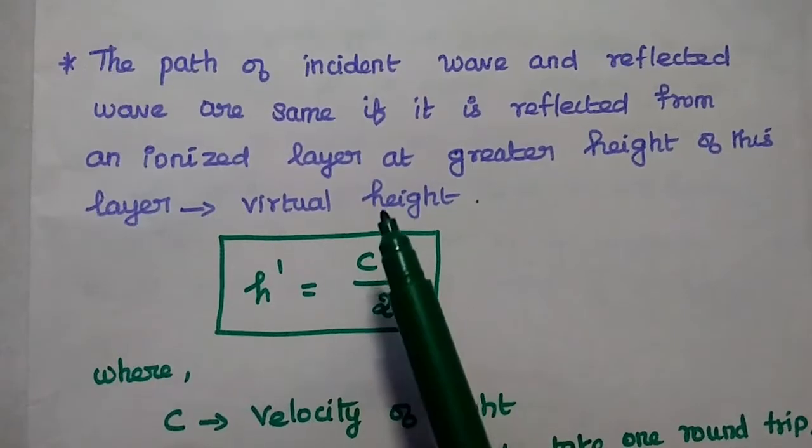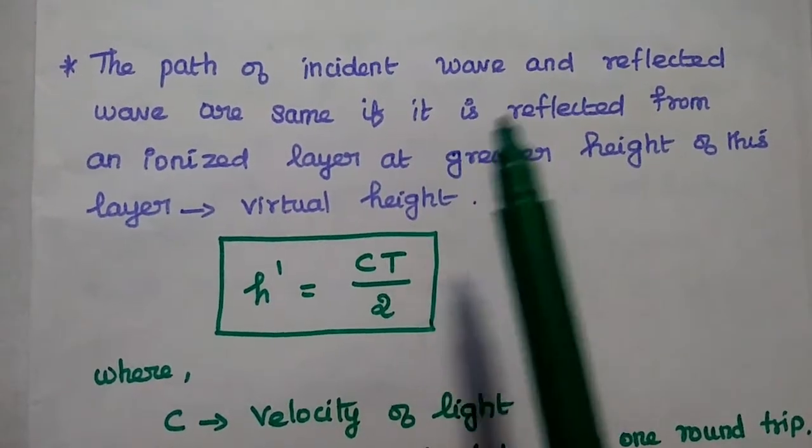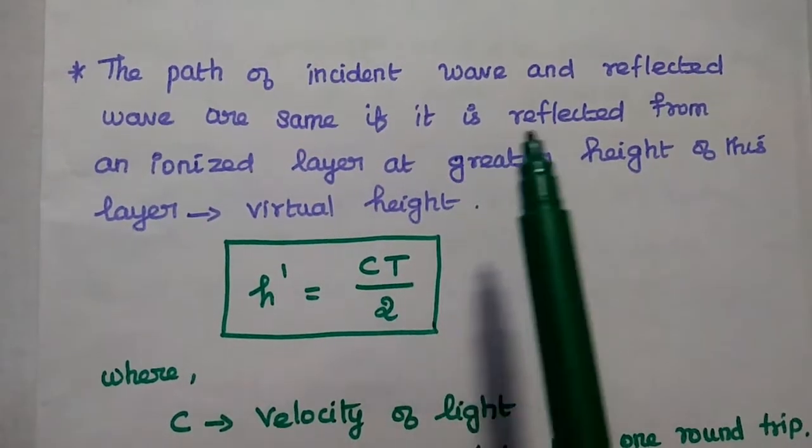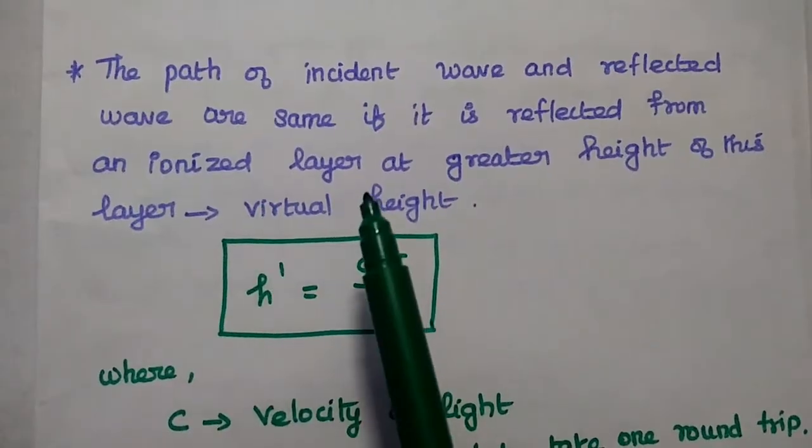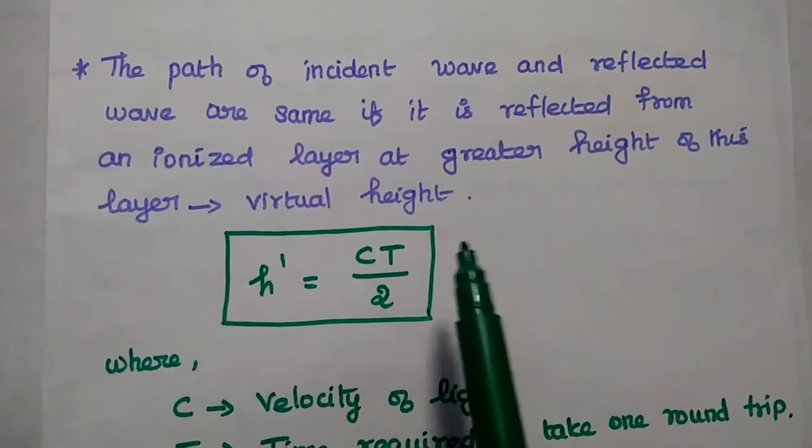In order to get the virtual height, we have to ensure that the path of the incident wave and reflected wave are same. If both are same, then the wave is reflected from an ionized layer at a greater height of this layer. That's what virtual height.